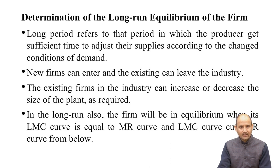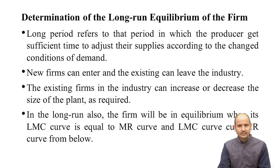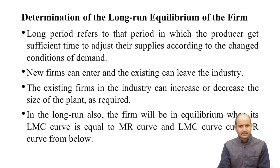Now we discuss the determination of long-run equilibrium of the firm. The long period is the period in which the producer gets sufficient time to adjust their supplies according to changes in demand conditions. New firms can enter and existing ones can leave the industry. Existing firms can increase or decrease the size of their plant as required. In the long run, the firm will be in equilibrium when its long-run marginal cost (LMC) equals MR and LMC cuts MR from below.